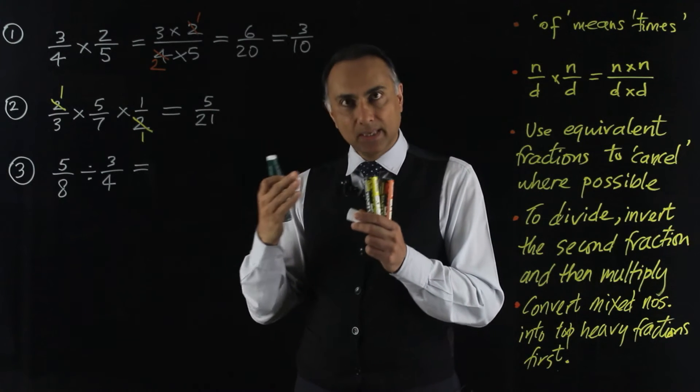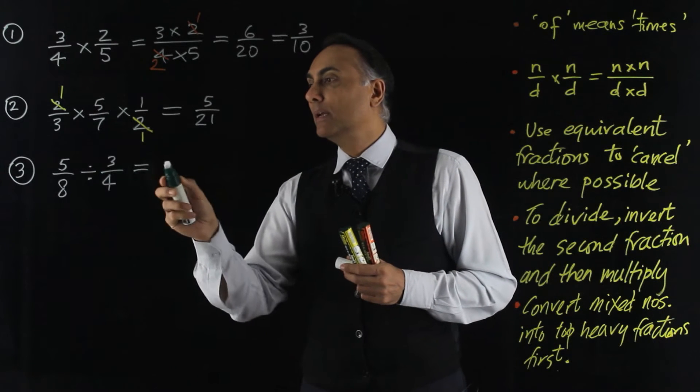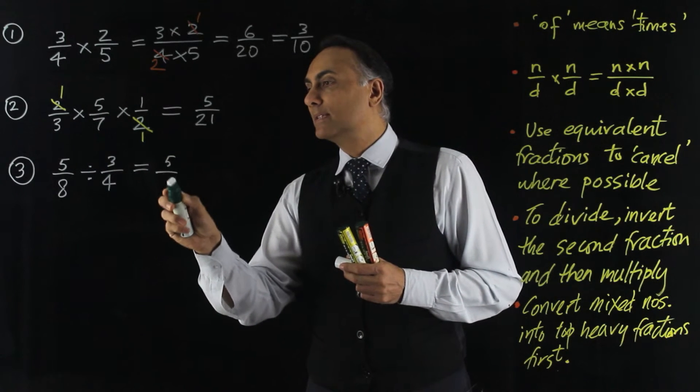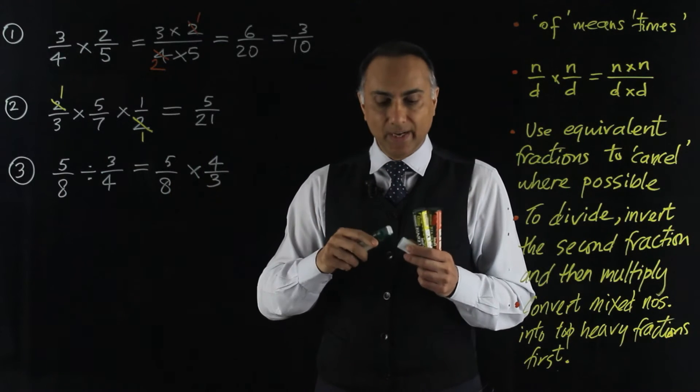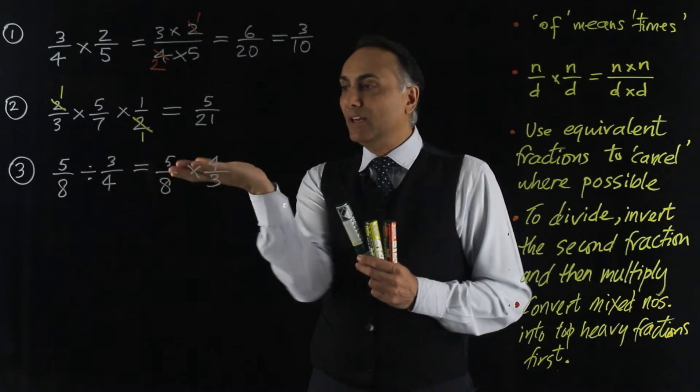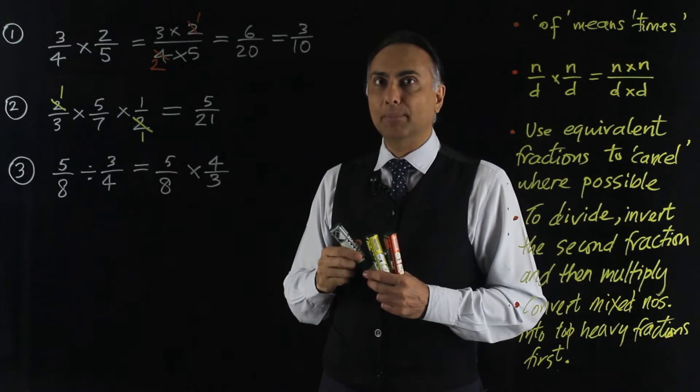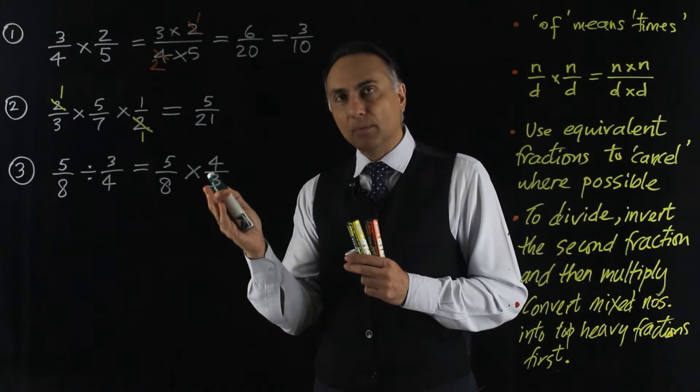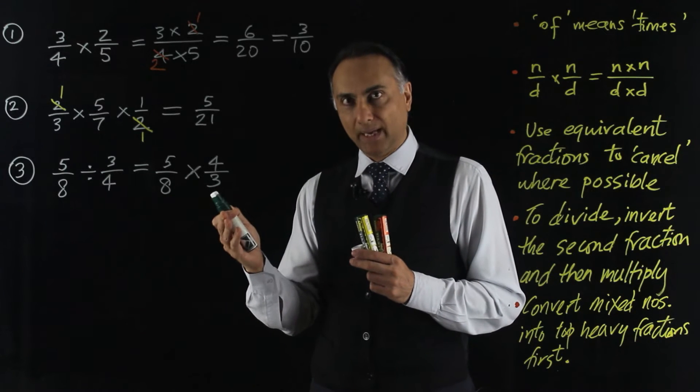So in other words, dividing by 3 quarters is the same as multiplying by 4 thirds. So dividing by 3 quarters is the same as multiplying by the inverse of 3 quarters. 5 eighths times 4 thirds. So this is what you do to divide by a fraction. You invert the fraction, meaning turn it upside down, and multiply by it.